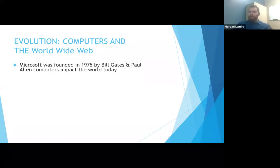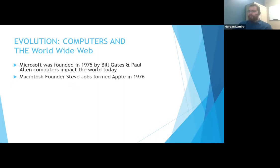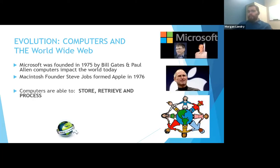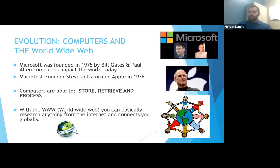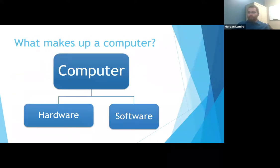These fell off the original GUI systems of DOS, invented in 1975. Shortly after that, Steve Jobs broke off from their group and formed Apple. They are the two biggest players in the PC market today, though Samsung is currently beating both of them globally. Computers are able to store, retrieve, and process. With the World Wide Web, you can connect and research anything on the internet globally. What makes up a computer are two things: hardware and software.